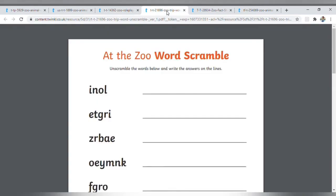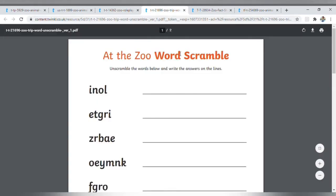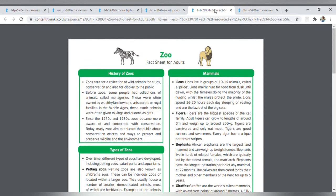We have these zoo word scramble sheets, which are great for children to apply their thinking of sounds in the right order. And of course, if adults need any extra zoo facts, we've got you covered as well.